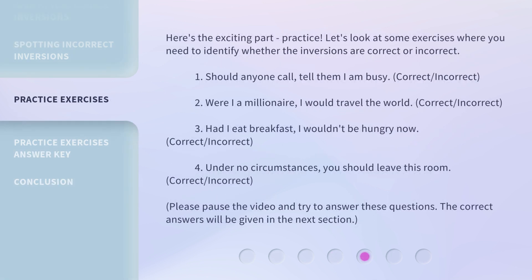Here's the exciting part — practice. Let's look at some exercises where you need to identify whether the inversions are correct or incorrect. 1. Should anyone call, tell them I am busy. Correct or incorrect? 2. Were I a millionaire, I would travel the world. Correct or incorrect? 3. Had I eat breakfast, I wouldn't be hungry now. Correct or incorrect? 4. Under no circumstances, you should leave this room. Correct or incorrect? Please pause the video and try to answer these questions. The correct answers will be given in the next section.